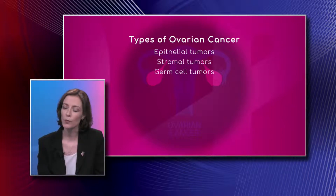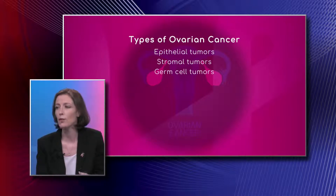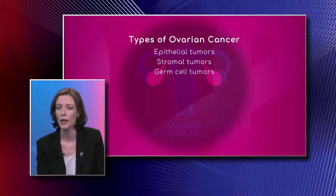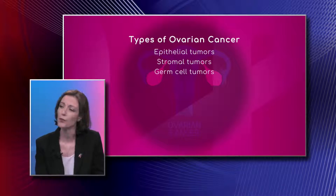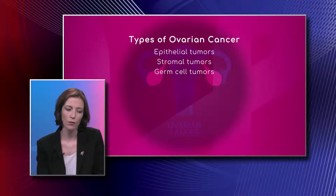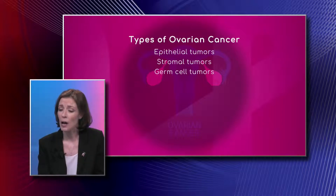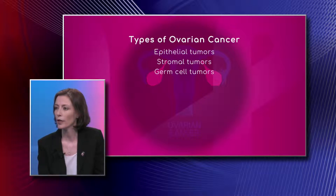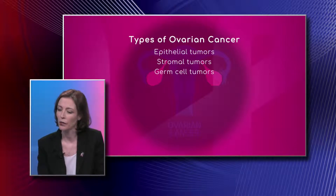The stromal tumor is actually the connective tissue of the ovary. Most of them are benign and there's not that many of them — about two to three percent are stromal tumors. Germ cell tumors are actually what produces the ovum, the egg. Those are far less frequent and tend to happen more in teenage and younger women, but the majority are benign and if they're not, they're very treatable — often just removing that ovary while keeping fertility.